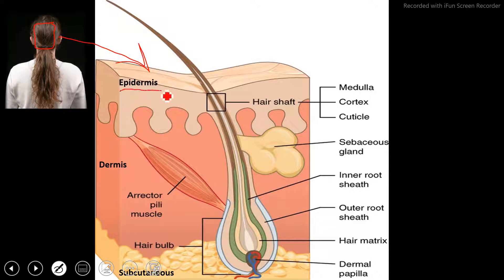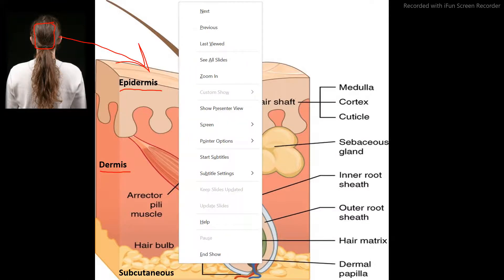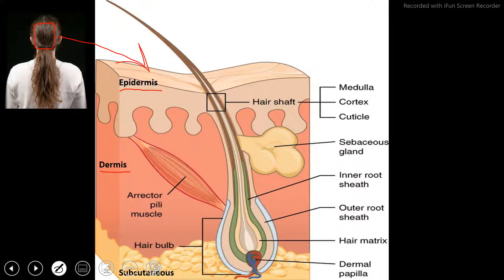Here we have the epidermis, which is the outer layer of our skin, the dermis, which is the second layer of our skin, and then the subcutaneous down here, which is the fatty layer of our skin.